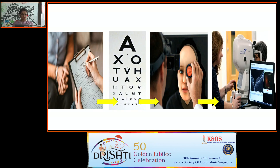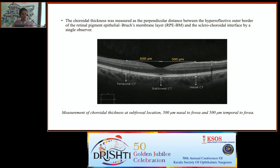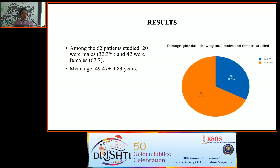After obtaining written informed consent, we performed BP measurement, visual acuity measurement, indirect ophthalmoscopy, and OCT scan. Choroidal thickness was measured in three locations: sub-foveally, 500 micrometers nasal to the fovea, and 500 micrometers temporal to the fovea. This is defined as the perpendicular distance between the hyperreflective outer border of the RPE/Bruch's membrane to the sclero-choroidal interface, measured by a single observer. Data analysis was done using SPSS software.